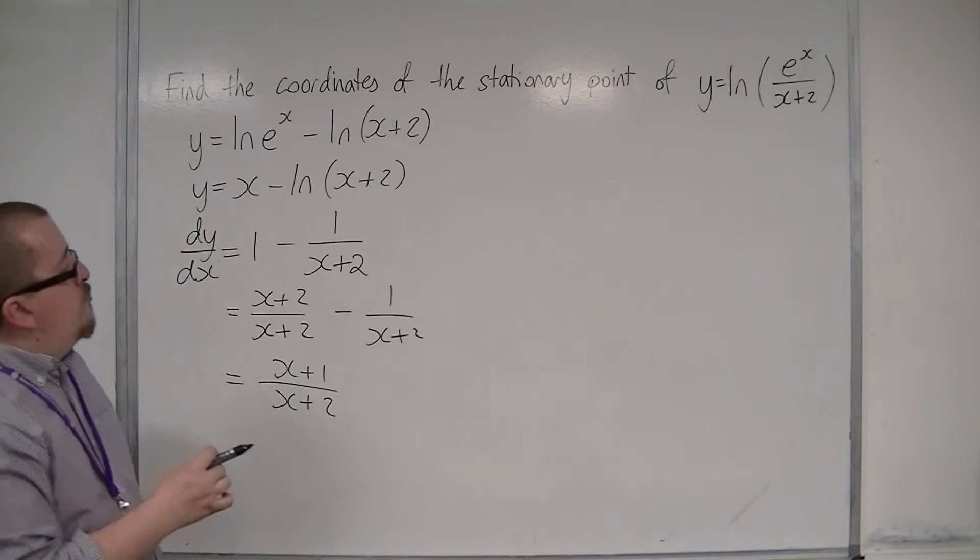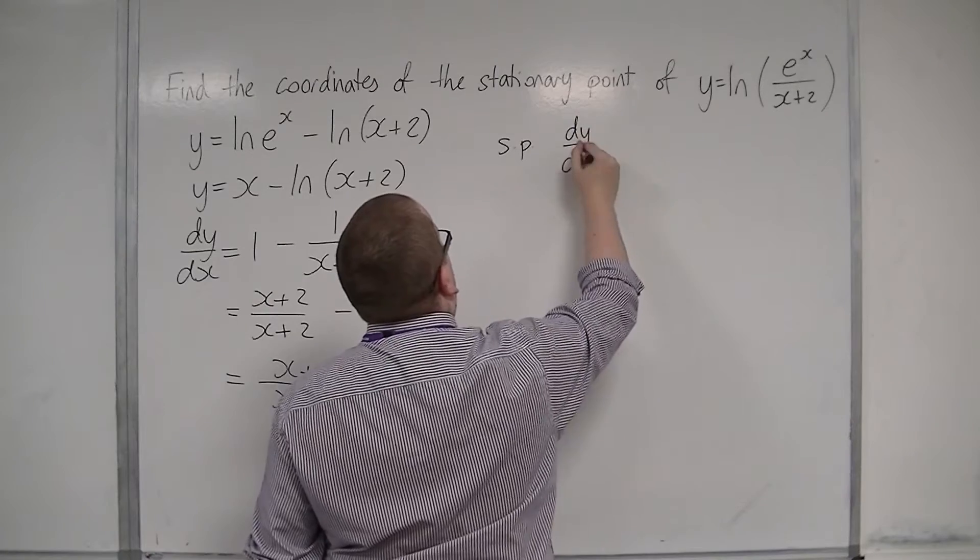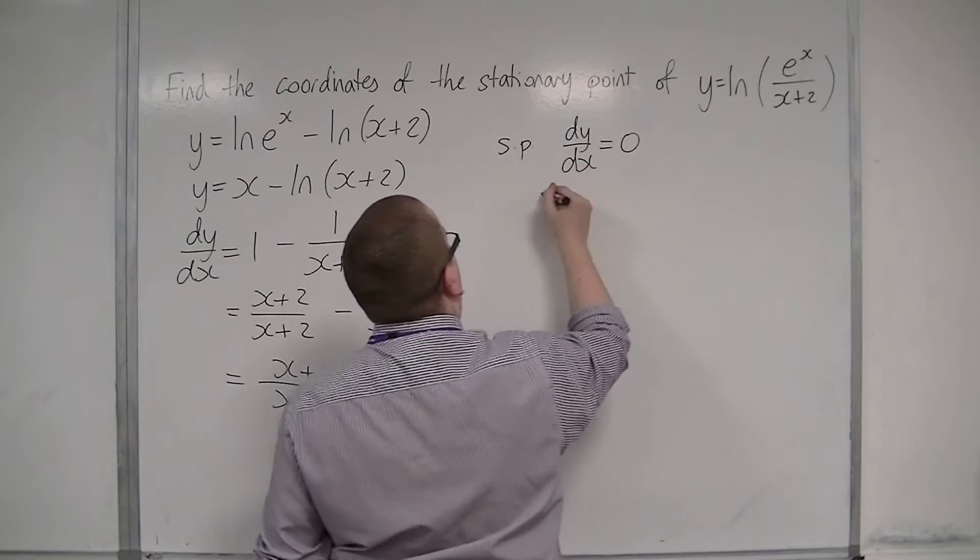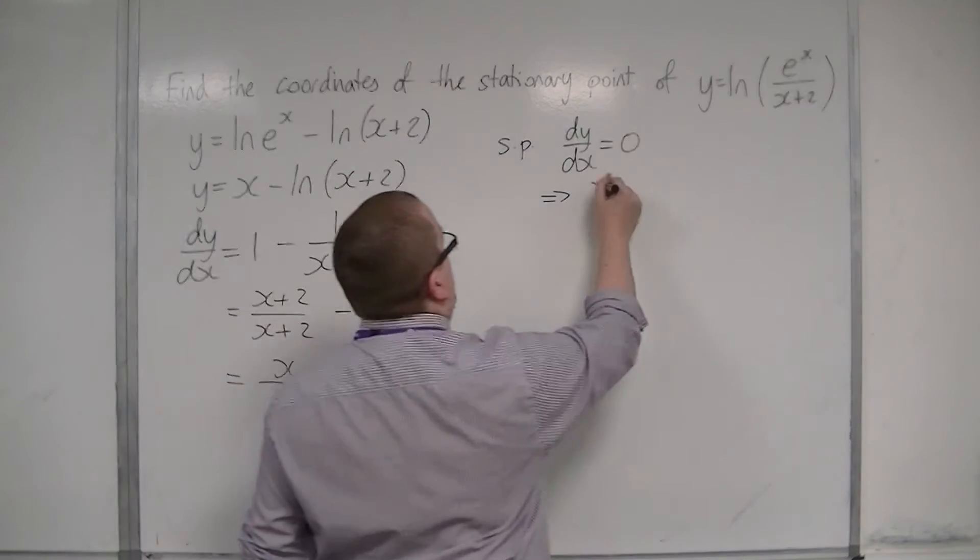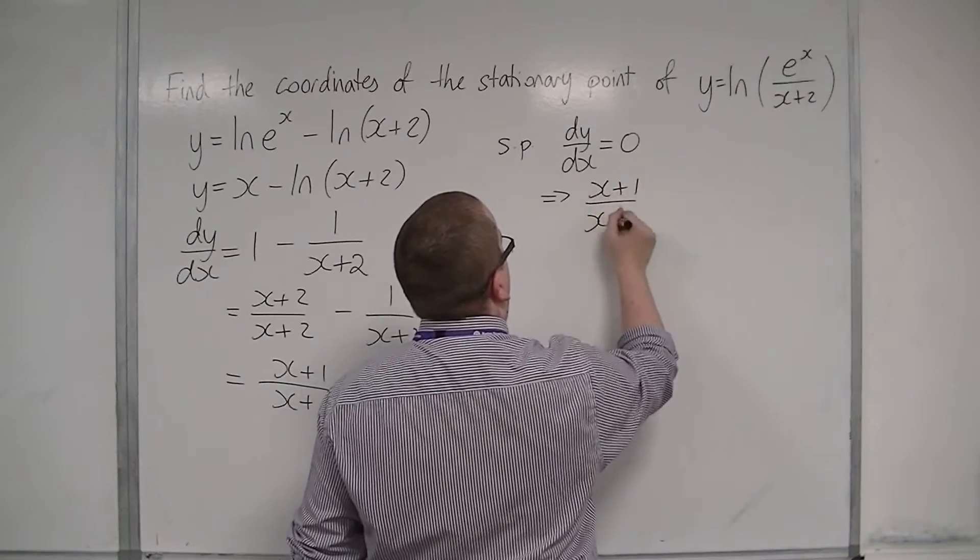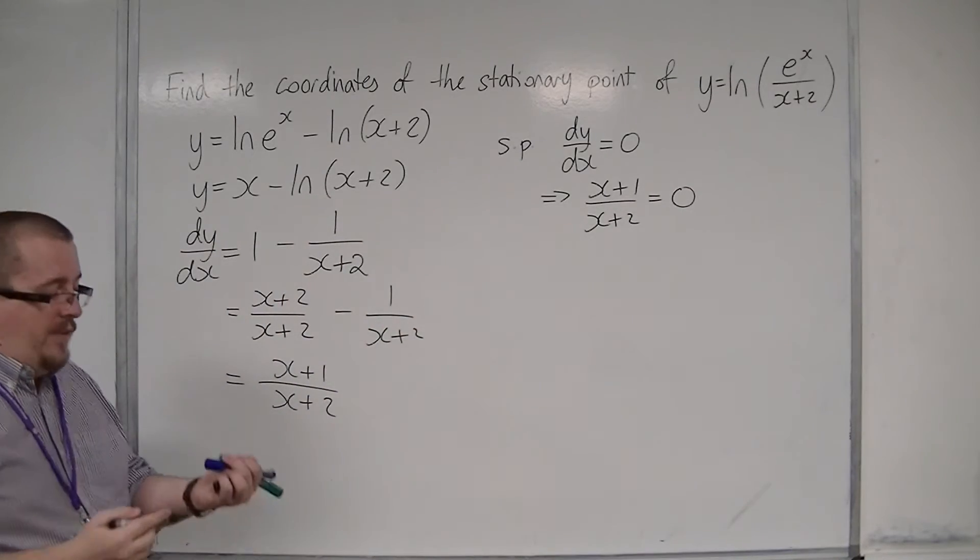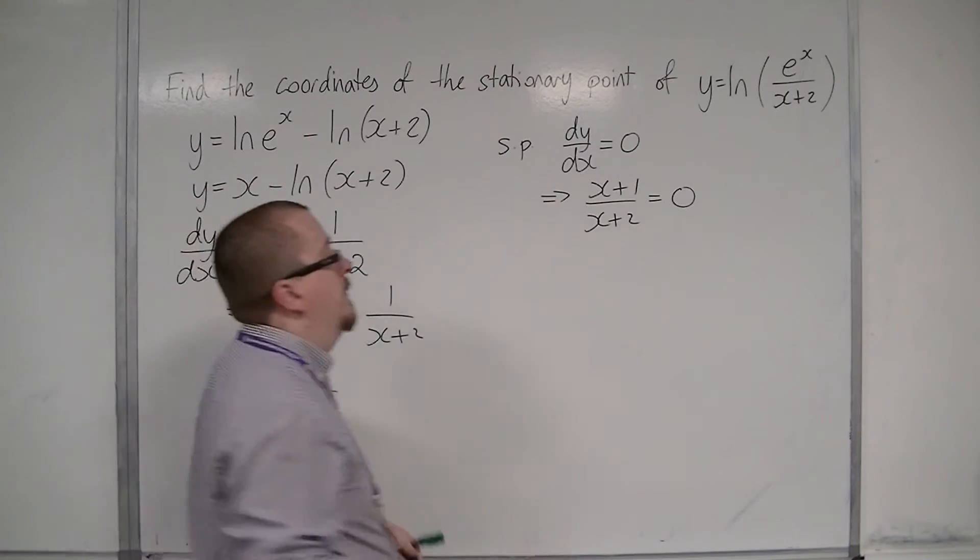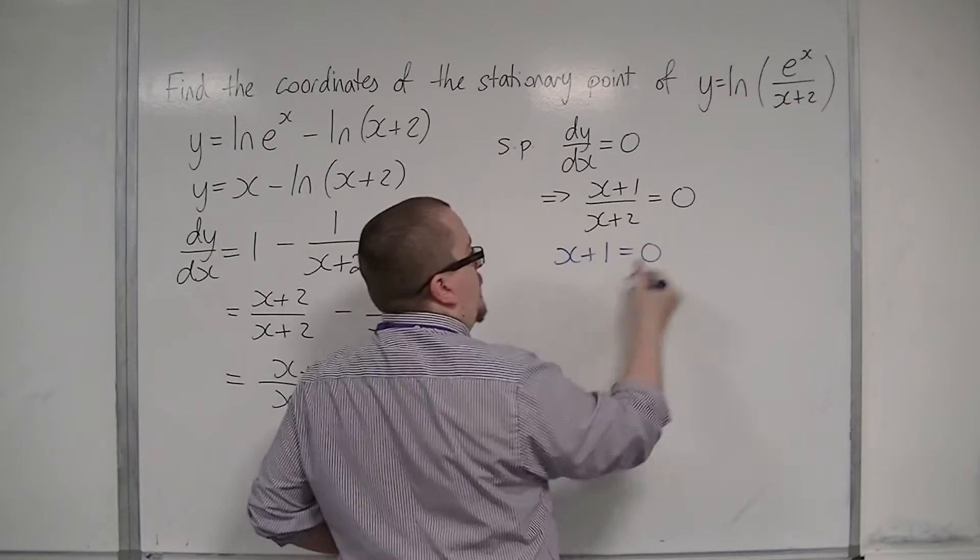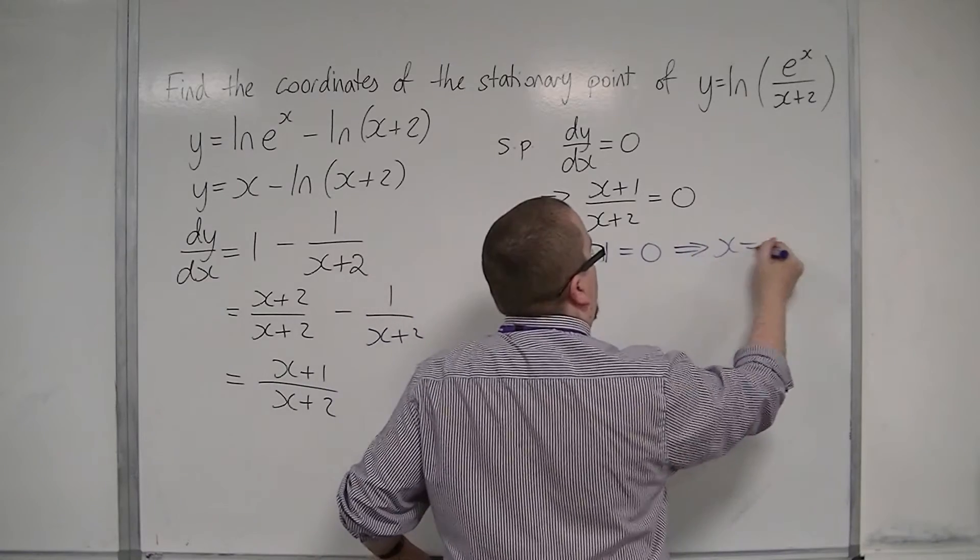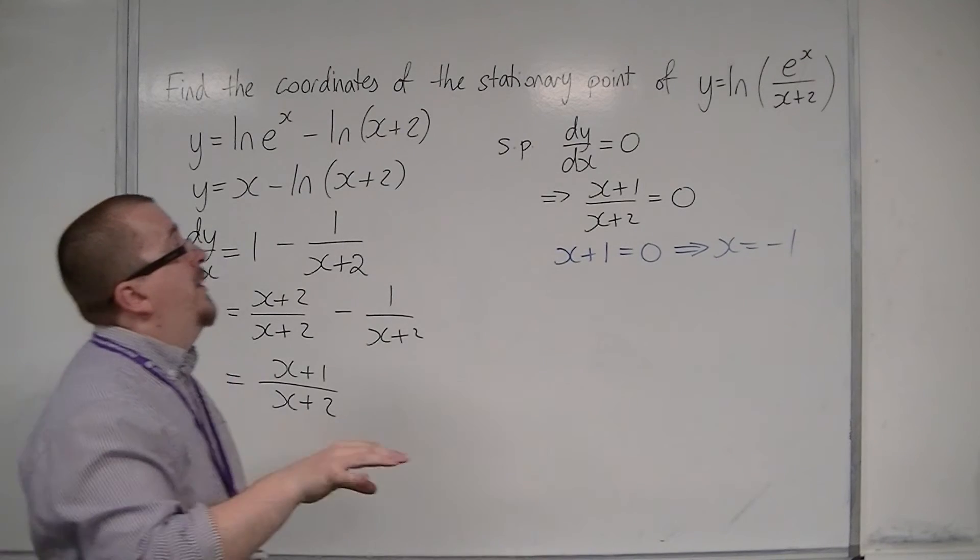Now, stationary points exist when dy by dx is 0. So, that would mean that x plus 1 over x plus 2 would have to be 0. Now, the only way that a fraction is going to be 0 is if the numerator is 0. So, that means that x plus 1 would have to be 0. And so, x would have to be minus 1.